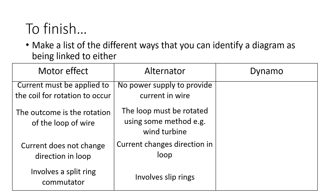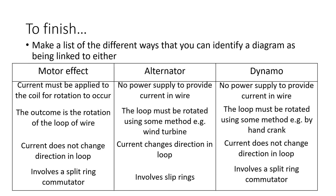For the dynamo: just like the alternator, there's no power supply for the current, and the loop must be rotated using some other method — for example, a hand crank. In a dynamo the current does not change direction and does not reverse in the coil, giving us DC electricity. It requires a split ring commutator rather than slip rings.